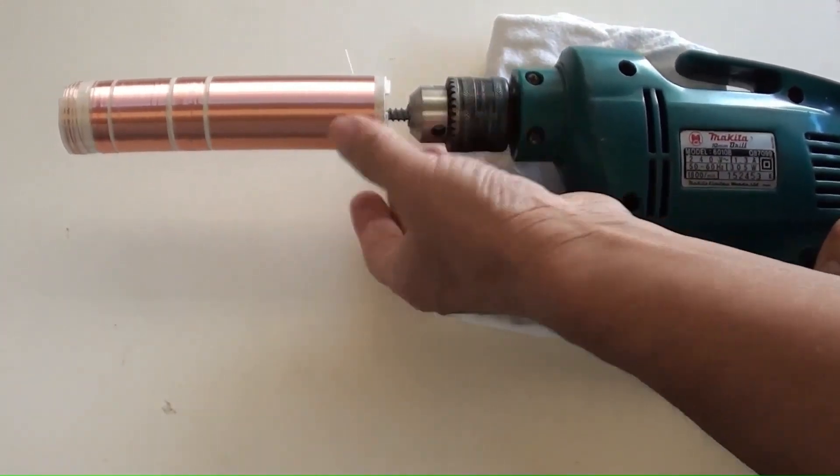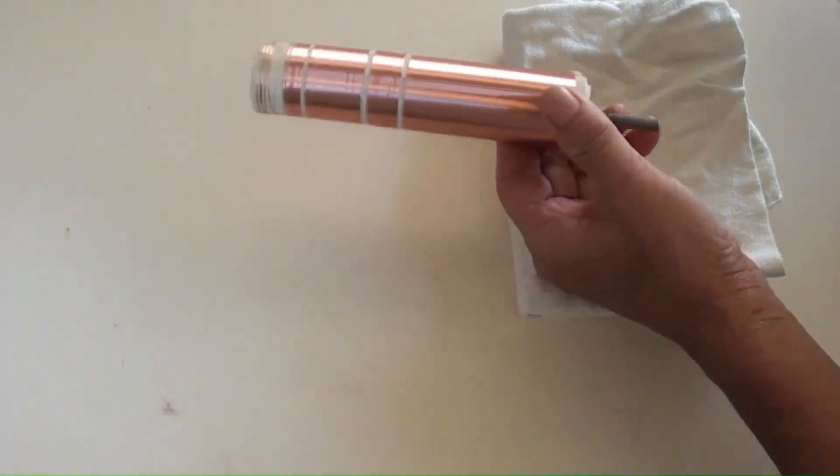By the way, the winding speed from this drill was reduced to 500 revolutions per minute by using a voltage regulator.